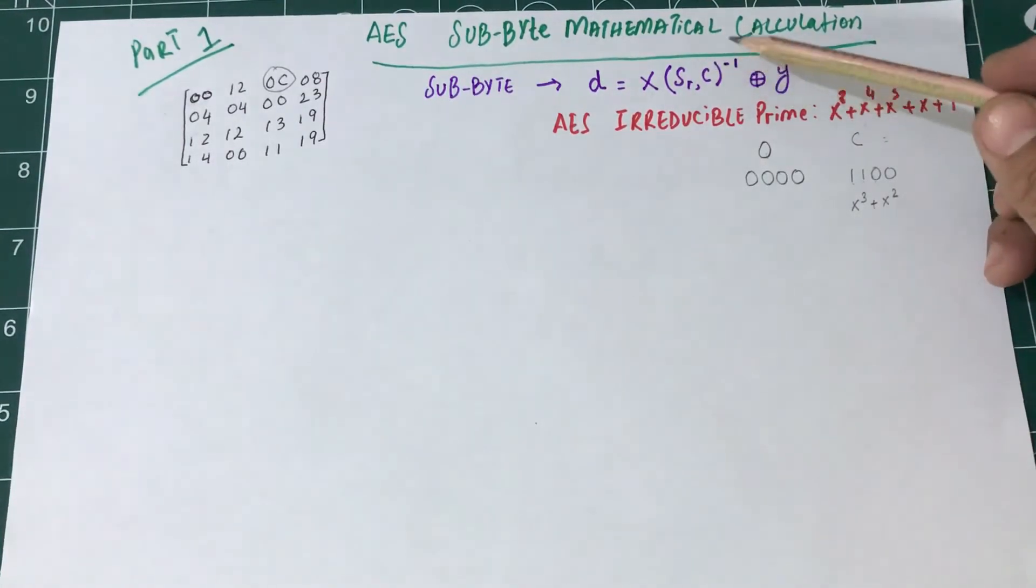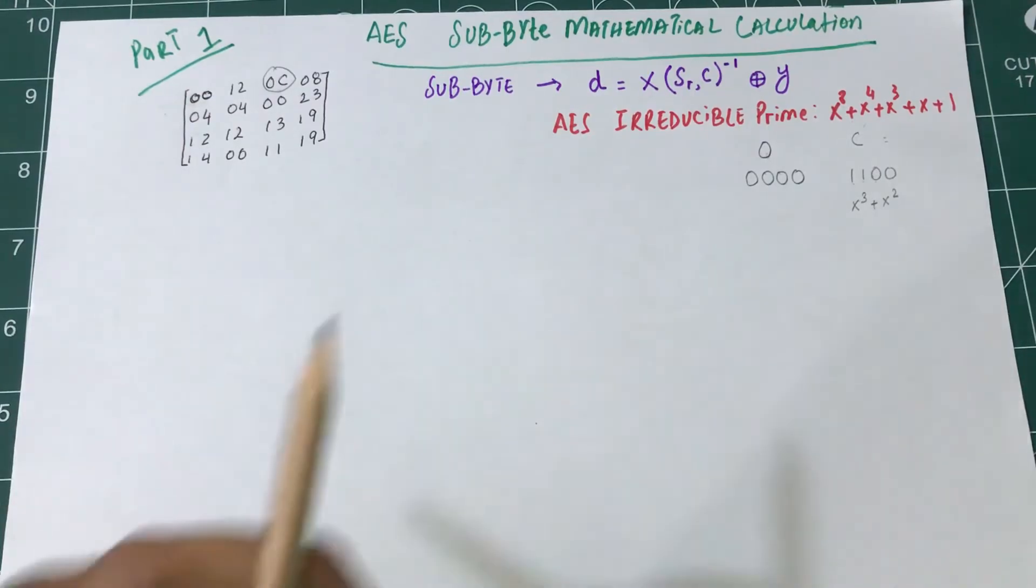This is the first step we're doing: finding the multiplicative inverse, which is very important. I made a separate video on how to find multiplicative inverse. Let's do it for AES.